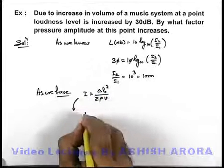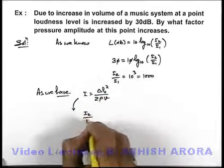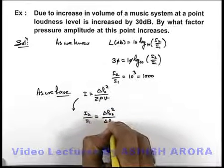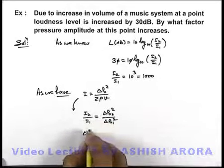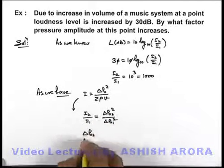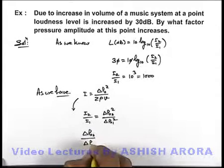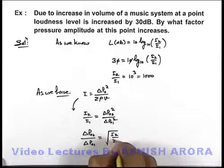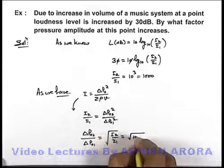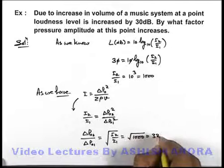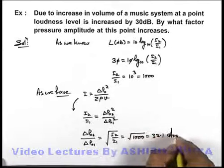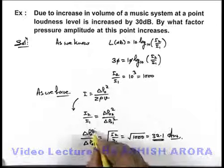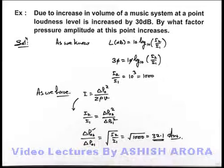From here we can write I₂ by I₁ is equal to ΔP₀₂ squared by ΔP₀₁ squared. So the ratio of pressure amplitudes at the final and initial instances can be written as the square root of I₂ by I₁, which is the square root of 1000, giving approximately 32.1. That is the factor by which the pressure amplitude will increase above the initial level.